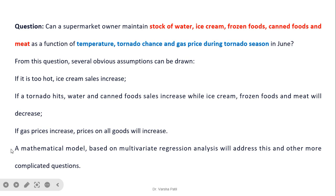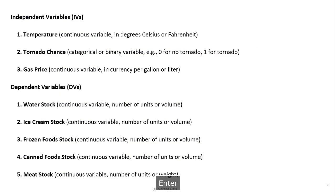A mathematical model based on multivariate regression analysis will address all these issues and more complicated questions. For this example, the independent variables are temperature, tornado chance, and gas price. These variables can be stored as a continuous variable, binary variable, and continuous variable respectively.